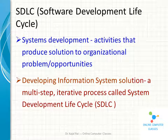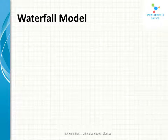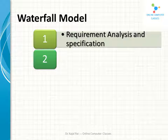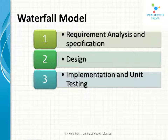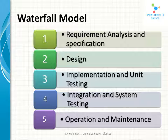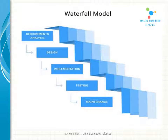Today we are going to discuss only about the waterfall model. The waterfall model has five phases. The phases always occur in a fixed order and they do not overlap. The first phase is the Requirement Analysis and Specification phase, the second is the Design phase, the third is the Implementation and Unit Testing phase, the fourth is the Integration and System Testing phase, and the fifth is the Operation and Maintenance phase. Each phase completes before the next phase begins.